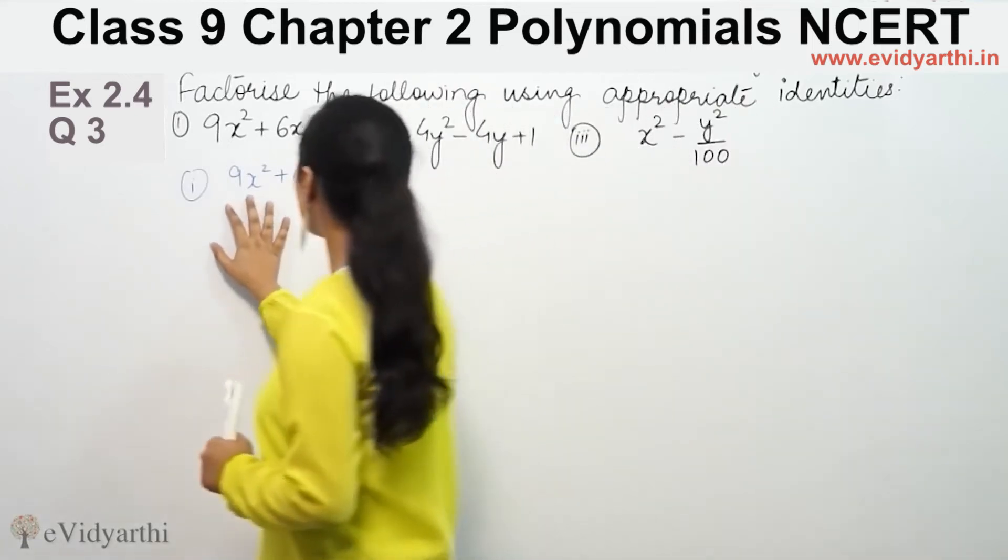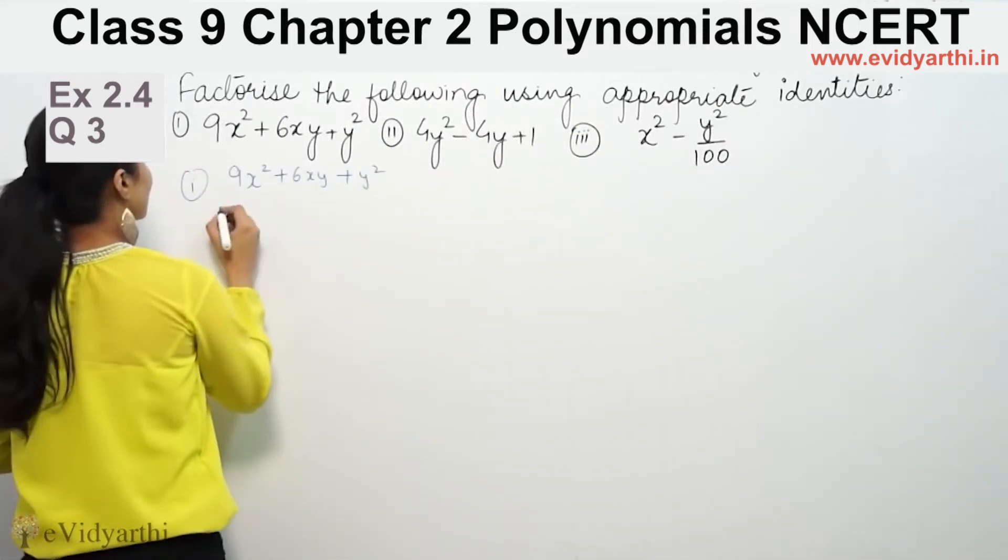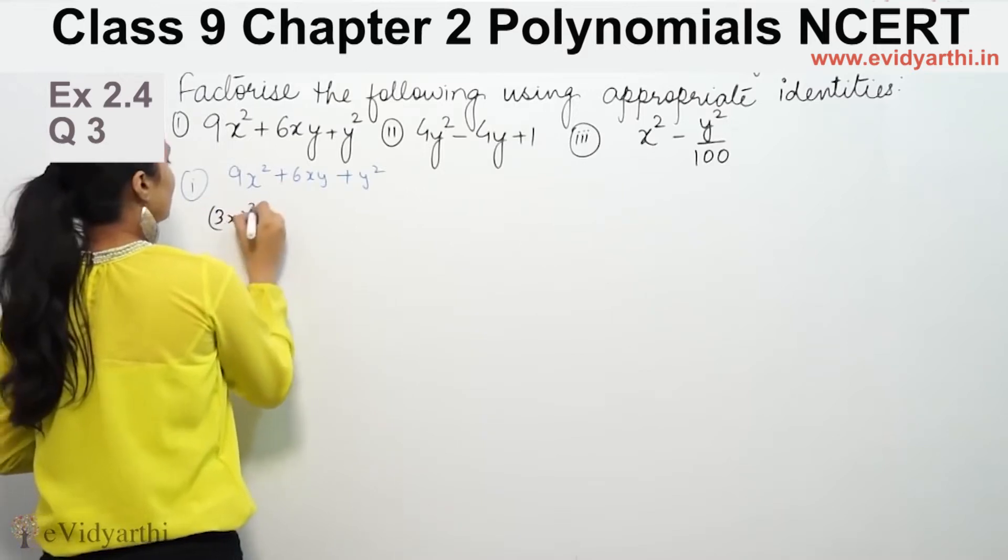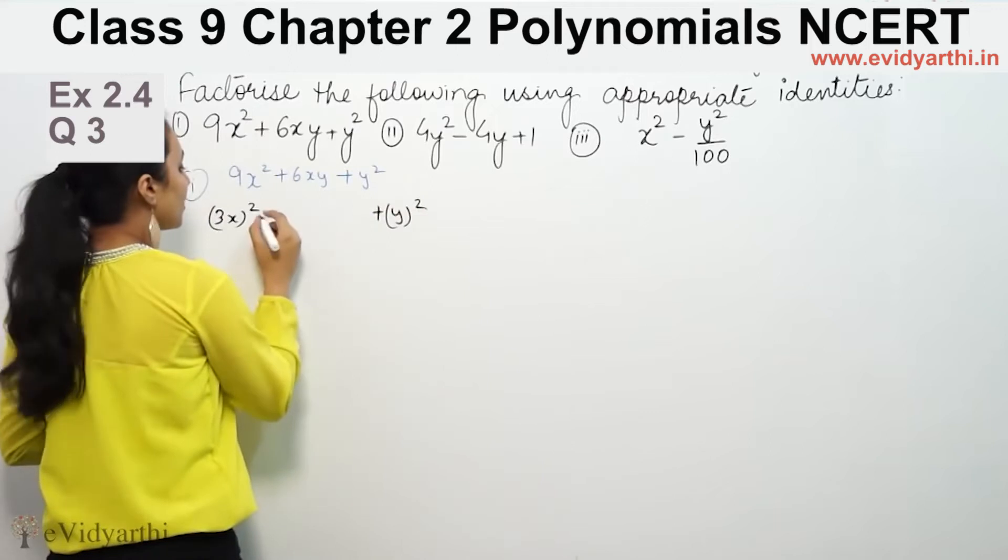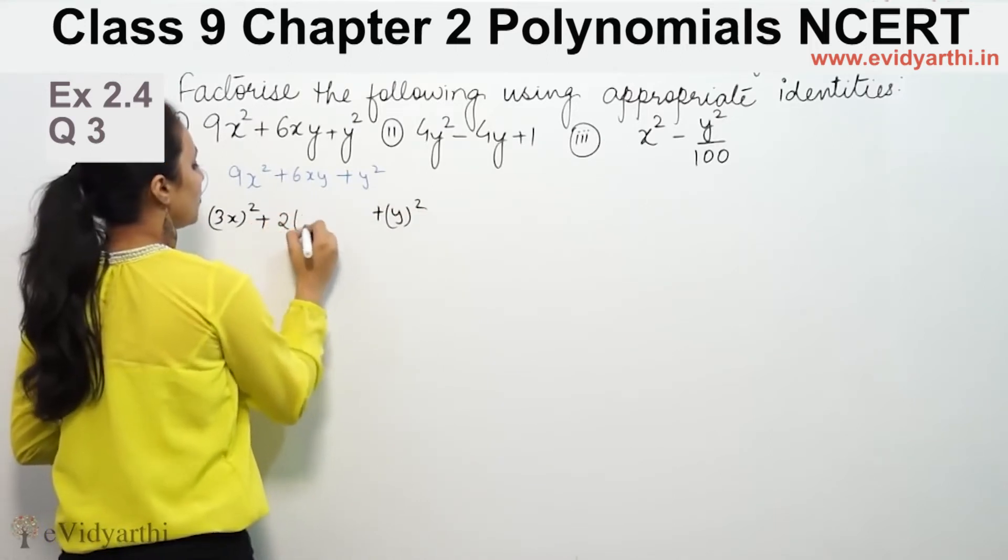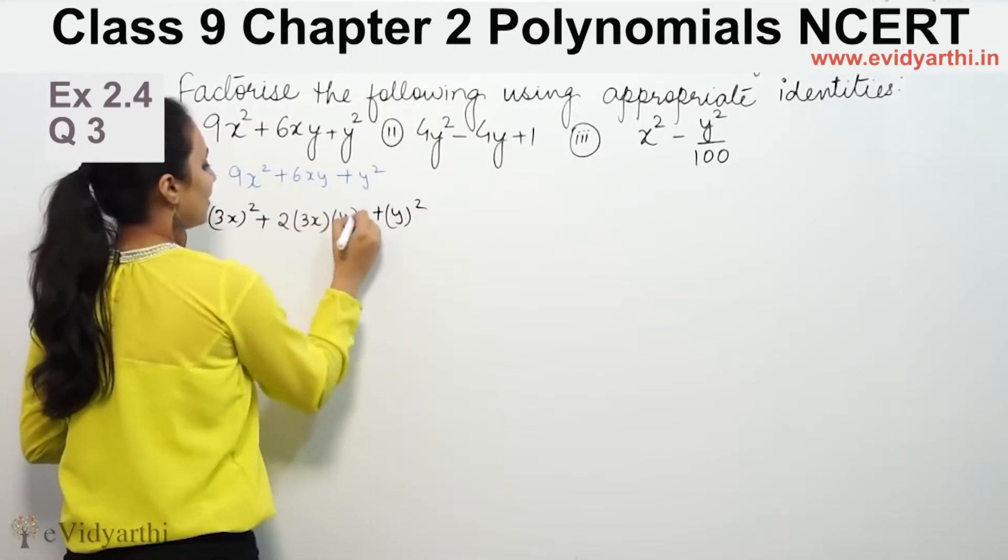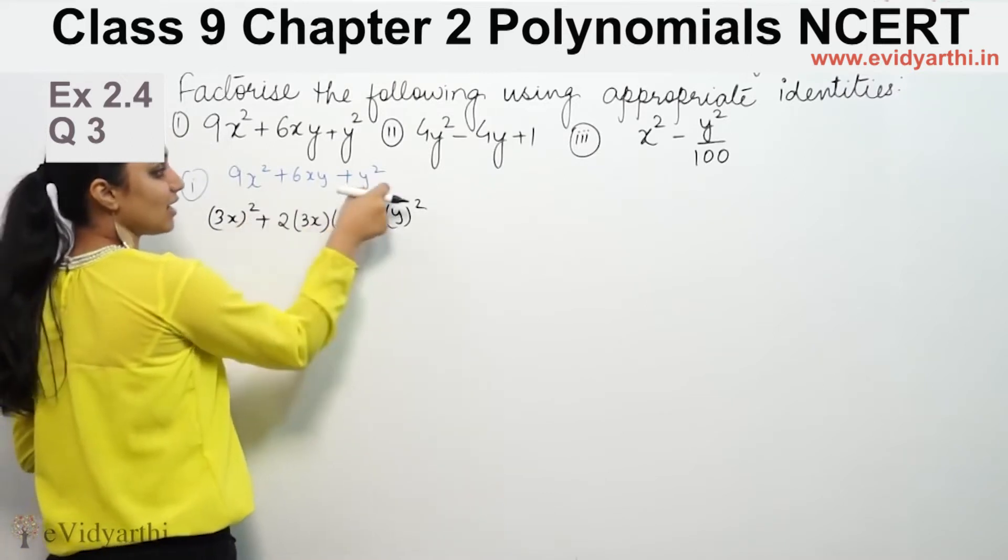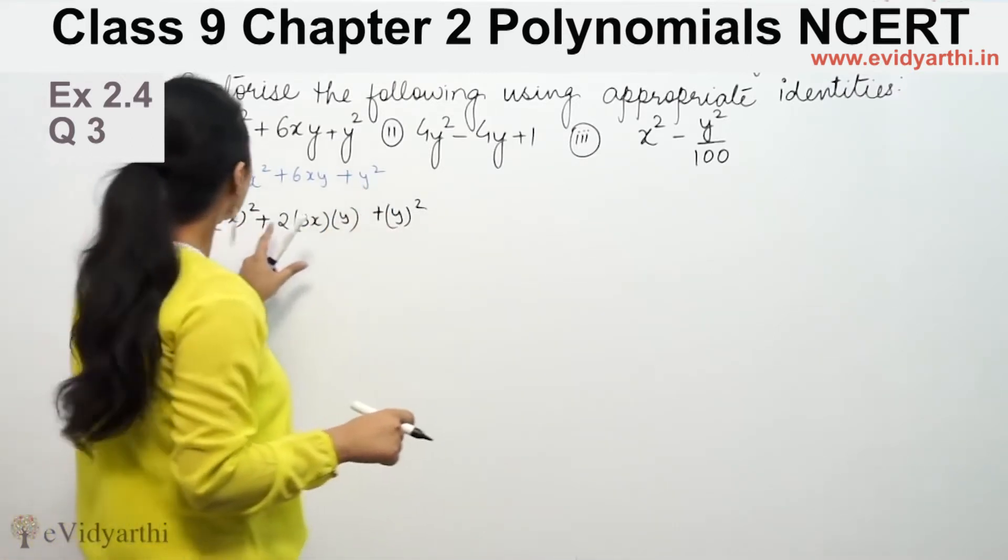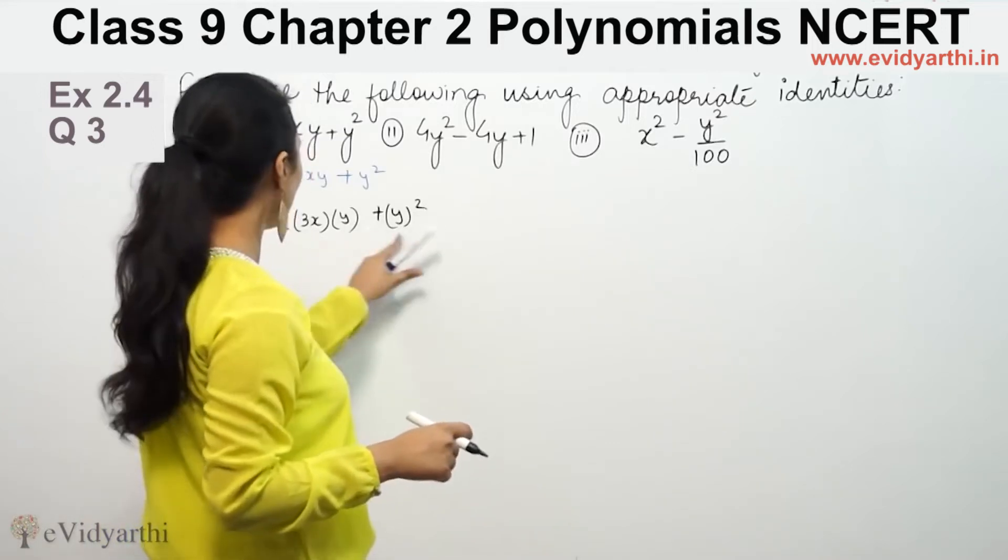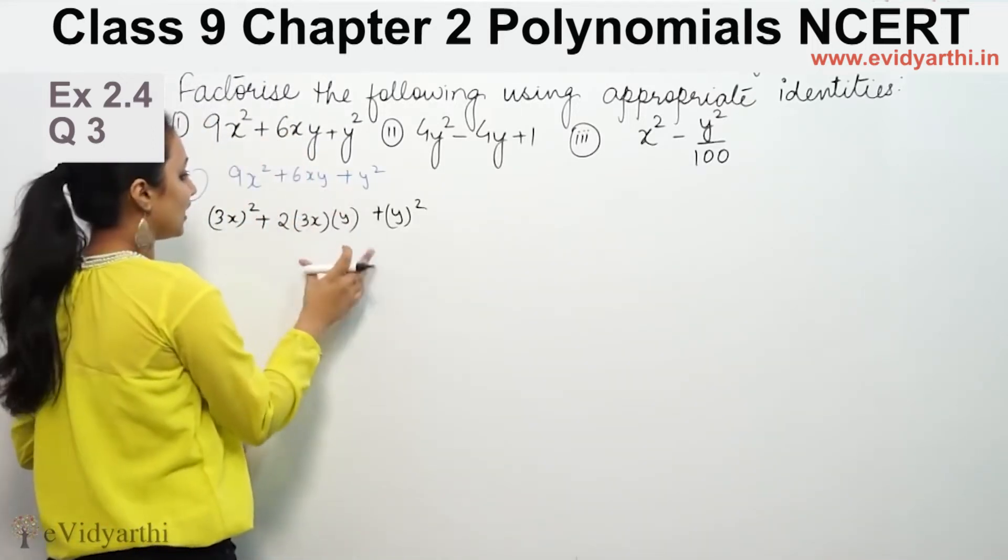What we have in the first term is 9x². The last term is y². 2 times 3x times y - basically, we can write this in square form. 2 into 3x into y gives 6xy.